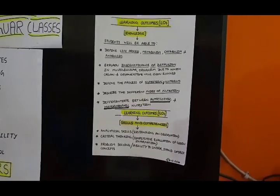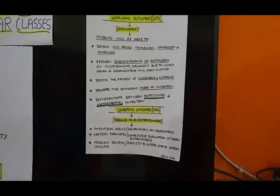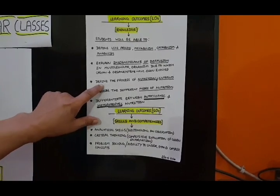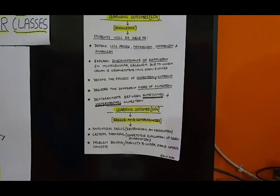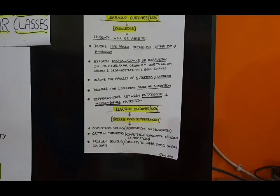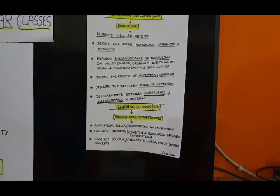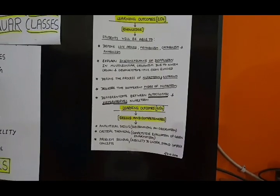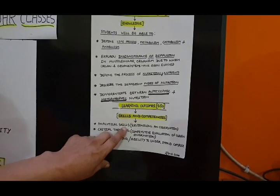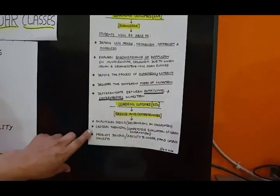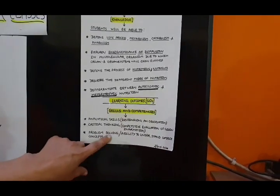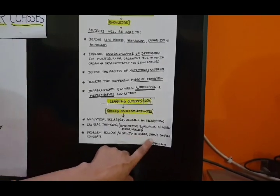You will be able to explain the significance of diffusion in multicellular organisms, due to which organ and organ systems have evolved. You will be able to define the process of nutrition as well as nutrients, and describe the different modes of nutrition and differentiate between autotrophic and heterotrophic nutrition. You will also gain skills such as analytical thinking, critical thinking, and problem-solving ability to understand complex concepts.